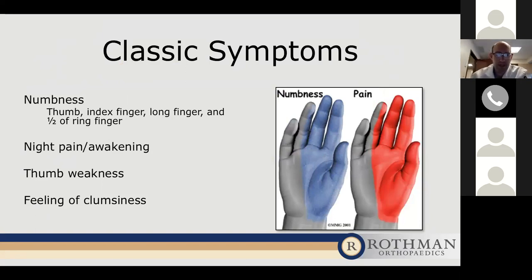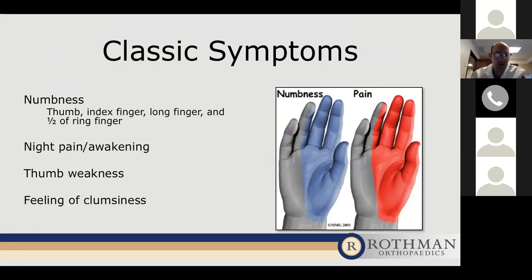The median nerve supplies sensation to this portion of the hand — typically the radial three and a half digits: the thumb, index, middle, and part of the ring finger. It is predominantly on the palmar side of the hand. Patients with numbness, tingling, and discomfort on the top or dorsal side of the hand usually don't have carpal tunnel syndrome. Many of my patients complain of nighttime disturbances — they're waking up from sleep to shake their hands out to alleviate discomfort. If it gets bad enough, that numbness becomes more persistent and can lead to feelings of clumsiness and even weakness of the thumb.